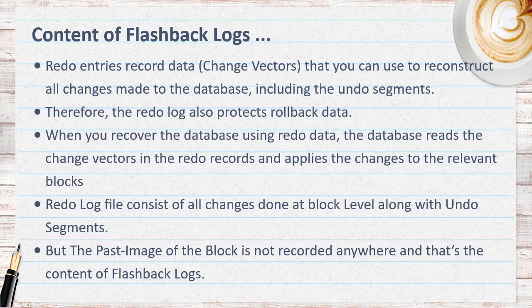But the past image of the block is not recorded anywhere — and that's exactly the content of the flashback logs. Say you are updating the salary of an employee from 10,000 to 20,000. The content of redo is the change vectors to update the salary from 10,000 to 20,000. The content of the undo segment is the previous value, which is 10,000. The previous image of the block when the salary was 10,000 goes to the flashback data. So when you flashback the database using the flashback logs, the previous block image is restored from the flashback logs, making the salary 10,000 again.